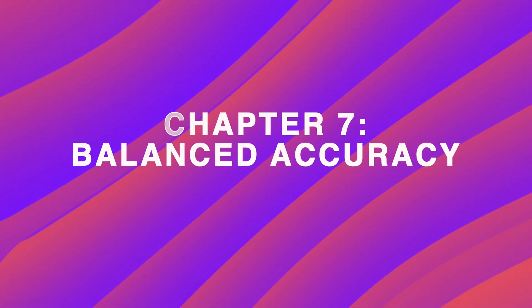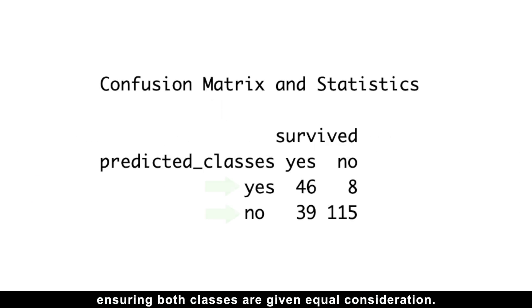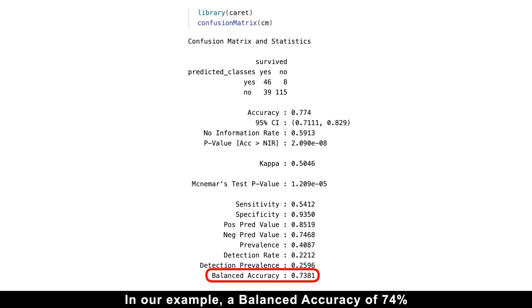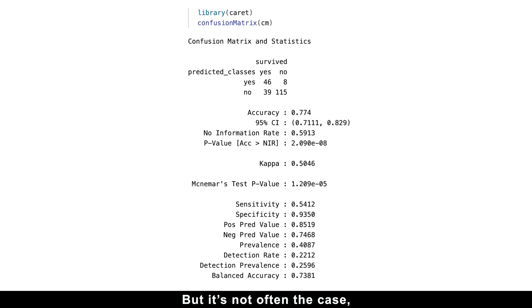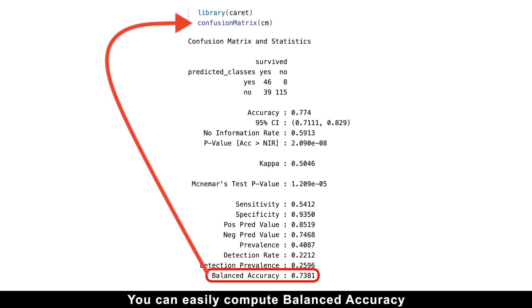Let me show you why balanced accuracy is better. Balanced accuracy offers a solution by averaging the sensitivity and specificity, ensuring both classes are given equal consideration. In our example, a balanced accuracy of 74% is only 3% below the overall accuracy of 77%, suggesting that the classes are relatively balanced. But it's not often the case. And that is the reason I don't trust accuracy when I don't see the confusion matrix or balanced accuracy being compared to accuracy. You can easily compute balanced accuracy using the confusion matrix function from the caret package.